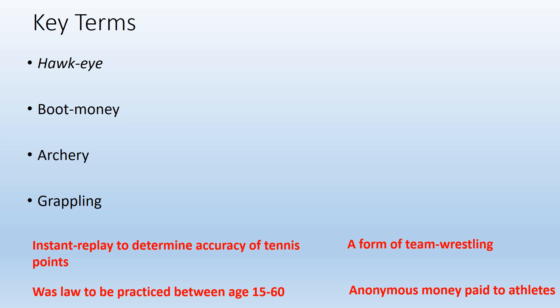So here we have four keywords to look at: Hawkeye, boot money, archery, and grappling. There are a few ways you can go about doing these — you can use process of elimination, do the ones you know, and then try to figure out the ones you're unsure of. You can also look in your leisure textbook by opening it up online and hitting Control-F, then type in the word to find a definition. Pause the screen now, and when you're ready to take them up, go ahead and hit Play.